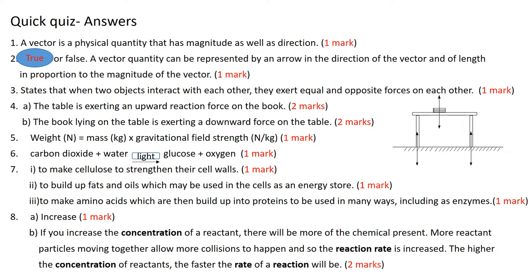The equation for photosynthesis is carbon dioxide plus water equals glucose plus oxygen. Plants use that glucose from photosynthesis to make cellulose to strengthen their cell walls, to build up fats and oils, and to make amino acids which then build up proteins, including enzymes. For the reaction rate question: part A - it increases; part B - if you increase the concentration of reactant, there are more chemicals present and there are more successful collisions. The word 'successful' is really important there.